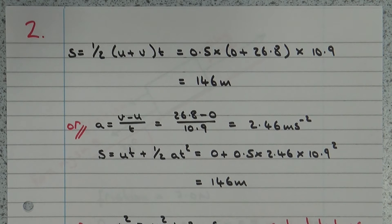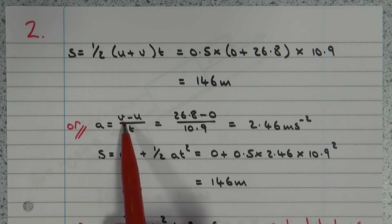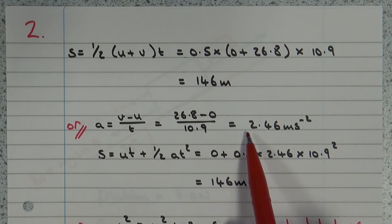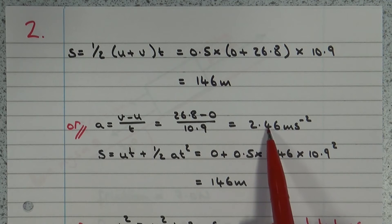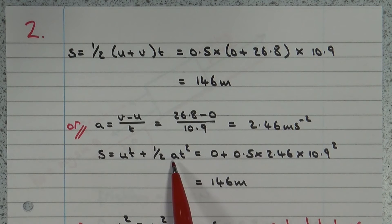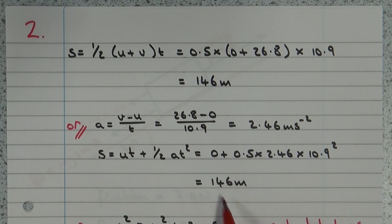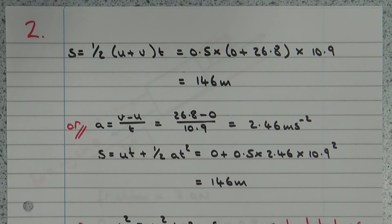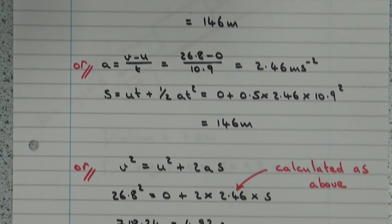The second method is to work out the acceleration first using a = (v − u) / t, which gives 2.46 ms⁻². Then use that in the equation s = ut + ½at², the second equation of motion. That gives us exactly the same value: 146 metres. Just remember to square the value of t, our time of 10.9 seconds, otherwise you'll get the wrong value.